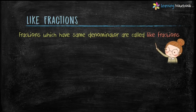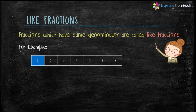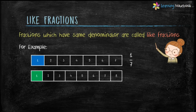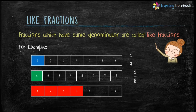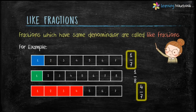Fractions which have same denominator are called like Fractions. Let's understand this term with the help of examples. What is the Fraction of the blue part in this figure? It is 1 by 7. What is the Fraction of the green part in the second figure? It is 1 by 8. And what is the Fraction of the red part in the third figure? It is 4 by 7. Fractions 1 by 7 and 4 by 7 are like Fractions because their denominators are same.